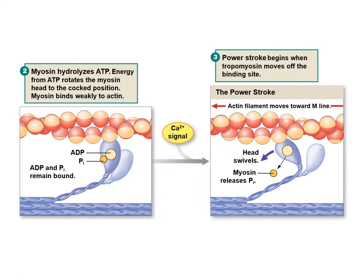If calcium is not present we stay in the relaxed state — binding weakly to actin, cocked position, hydrolyzed ATP. It's a matter of thinking transitionally and conditionally, working through the scenarios. The reason I have you learn this is that multi-step pathways later in the course require this kind of thinking, so learning this now helps you think dynamically rather than statically.